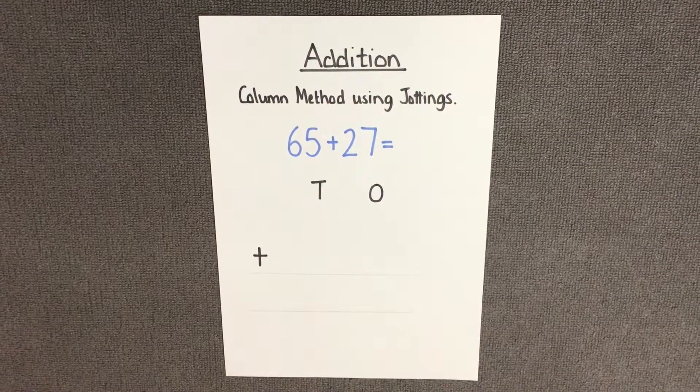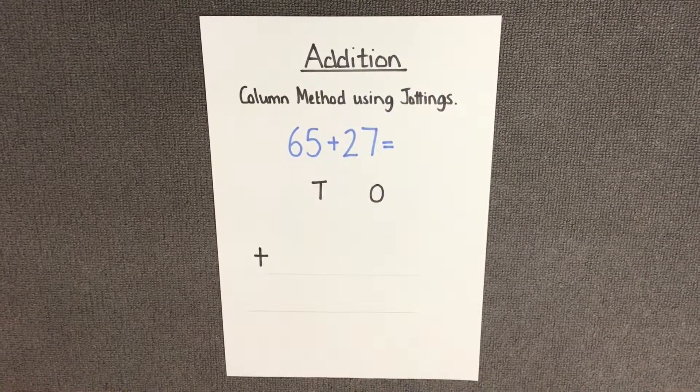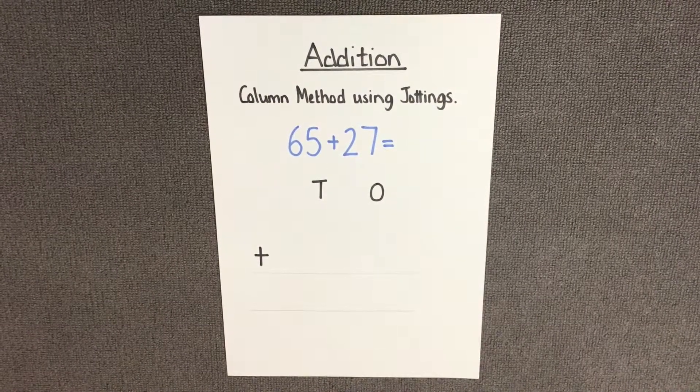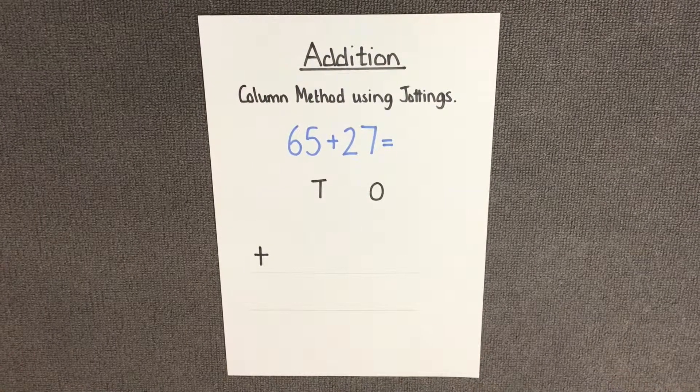Before we talk about addition, I'm going to teach you how to use the column method strategy using jottings. Let's start by reading the question: 65 add 27 equals.